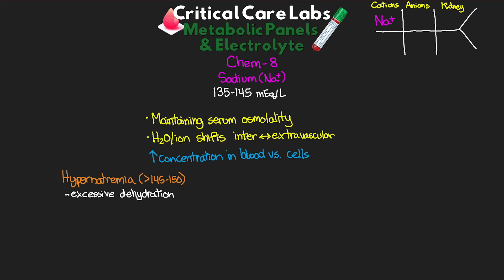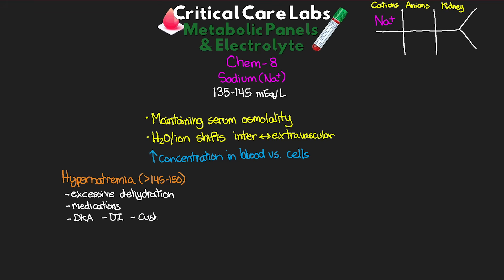In cases where sodium is too high, this is called hypernatremia — greater than 145 to 150 mEq/L. Some causes include excessive dehydration from GI or renal loss, certain medications such as sodium bicarb or sodium citrate, DKA, diabetes insipidus, or Cushing syndrome. Symptoms are primarily neurologic: altered mental status, weakness, irritability, focal neuro deficits, possibly coma and seizures. Treatment involves correcting water balance, reducing sodium by 0.5 to 1 milliequivalent per hour.